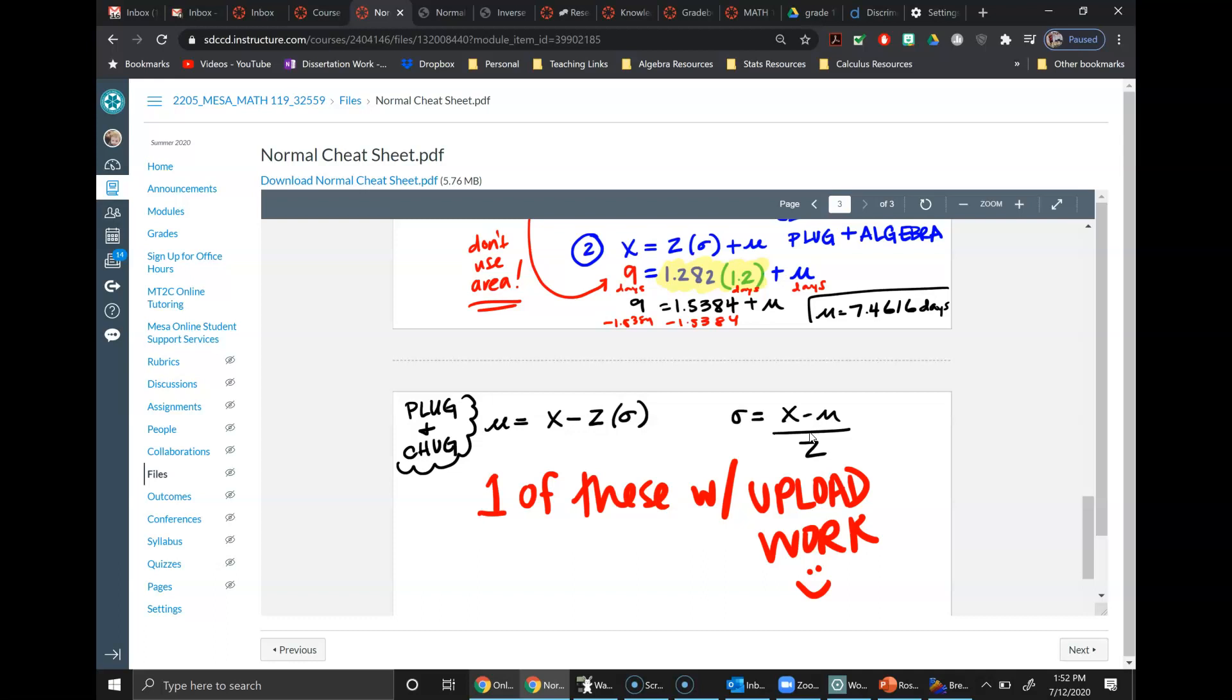So having you guys upload work is an easy way for me to give points. And you know, even just writing tricky inverse would get you a point. Drawing the curve would get you a point. So there's a lot of ways to get partial credit even if you get stuck on a problem.